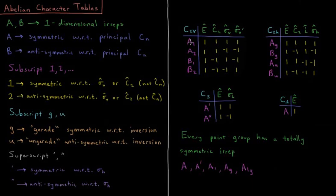Then you have the different irreducible representations of that point group. So C2V has irreps called A1, A2, B1, and B2. C2H has AG, BG, AU, BU. Cs just has A prime and A double prime. And C1 just has A.